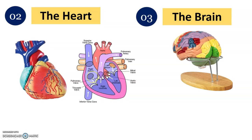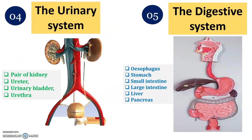Now let us move to organ models. For the heart model, remember to label all the arrows and parts clearly when writing your spotting answer. Next is the brain model — the brain has four lobes and various functional areas in its structure. The urinary system includes the adrenal glands, ureters, urinary bladder, and urethra. Prepare your arrows and labels carefully for each model.